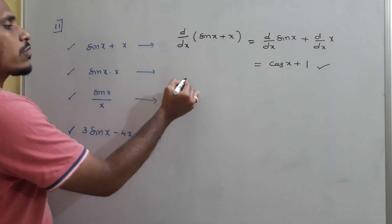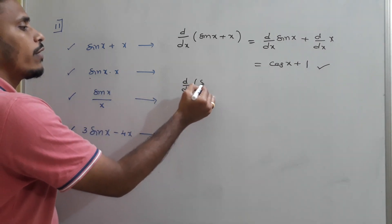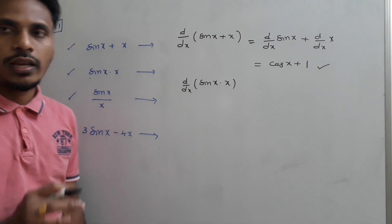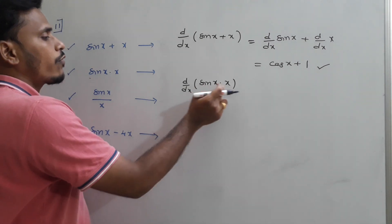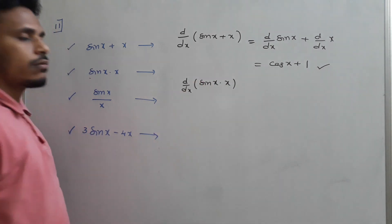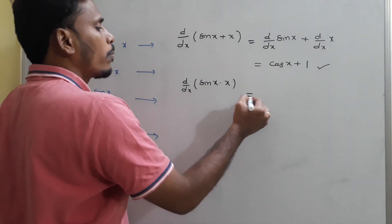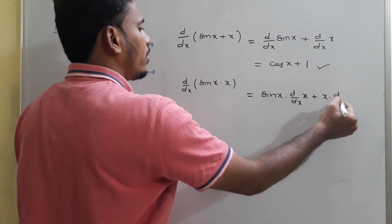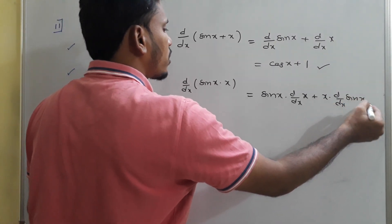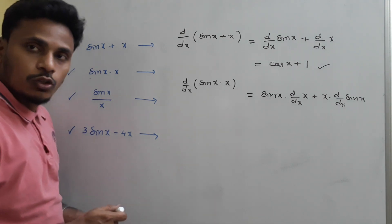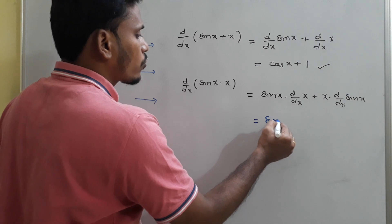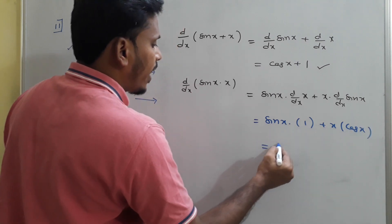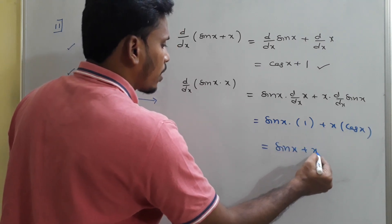For the product sin x times x, use the product rule: first function times derivative of second plus second function times derivative of first. This gives sin x times 1 plus x times cos x, so the answer is sin x + x cos x.